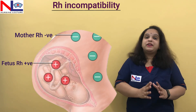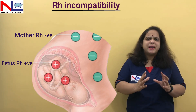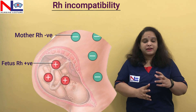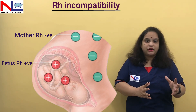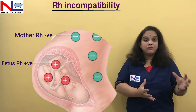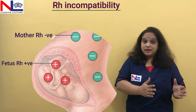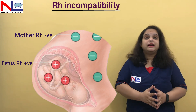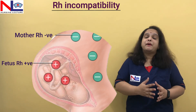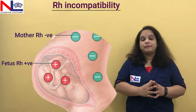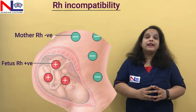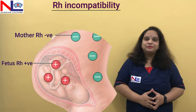In this lecture, we have discussed the basic concept of RH incompatibility — what it is and how it arises. It all depends on the genotype of the father, whether he is homozygous or heterozygous. In the next part, we will discuss the concept regarding immunity. Thank you.